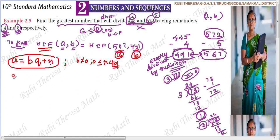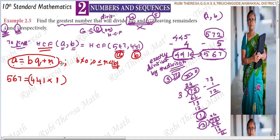This is A equals BQ plus R format. 567 equals 441 — A equals B into Q. We have to find this number. 441 into 1 is 441. We have to find this remainder. So 567 minus 441: 7 minus 1 is 6, 6 minus 4 is 2, 5 minus 4 is 1. So the remainder is 126.